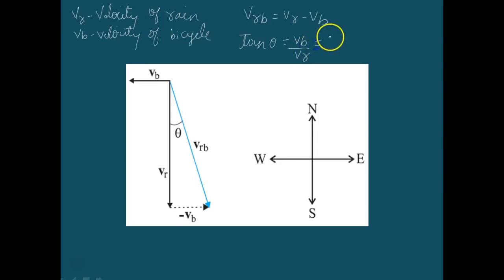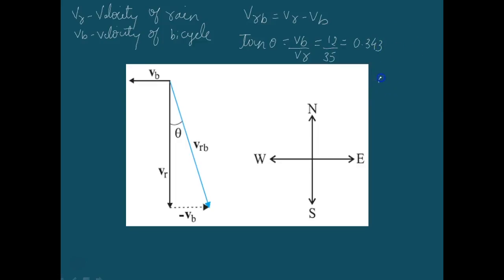We know the velocity of the bicycle is 12 meters per second and the velocity of the rain is 35 meters per second. So the angle theta is given by approximately 19 degrees. Therefore, the woman should hold her umbrella at an angle of about 19 degrees with the vertical towards the west.